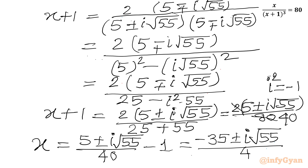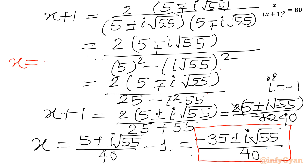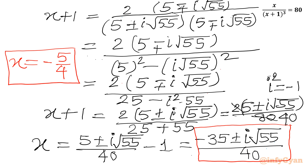So we finally have one real solution and two complex solutions. The complex solutions are x equal to (minus 35 plus or minus i times square root 55) over 40, and the real solution was x equal to negative 5 over 4. I hope friends you will like this video. Thank you so very much for watching — do not forget to like, share and subscribe. Till next video, goodbye.